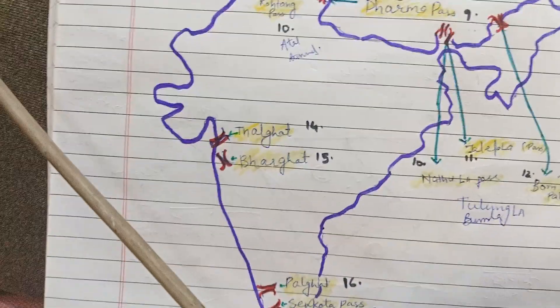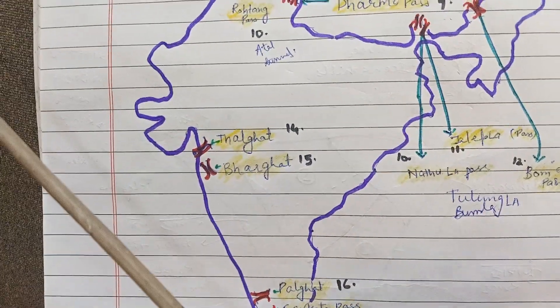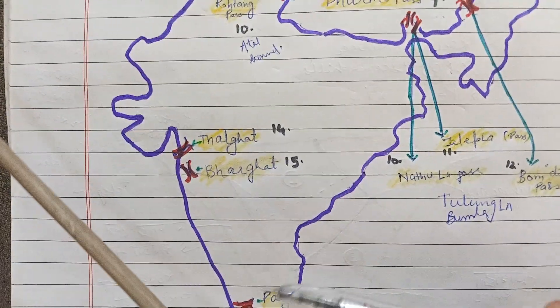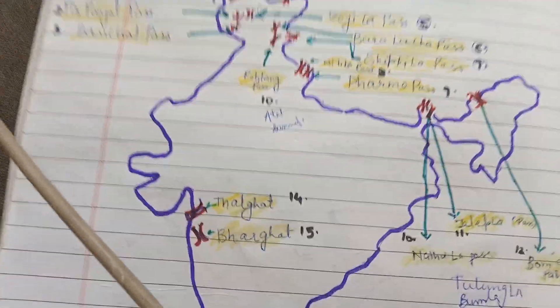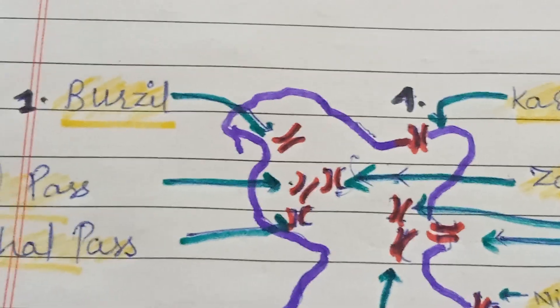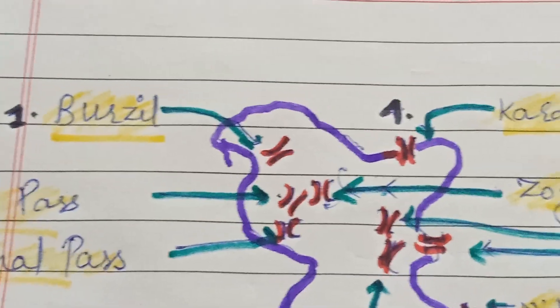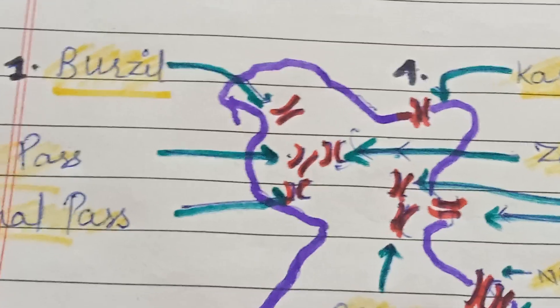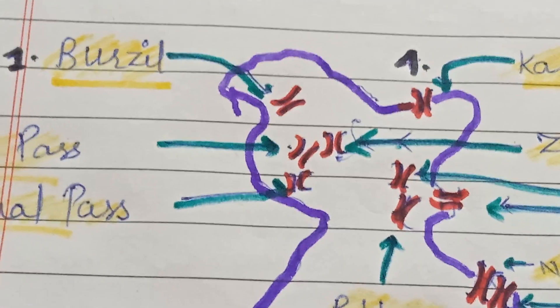Palghat is also connected to Pune. Now we are going to go up to the north. The first pass is Burzil Pass. The Burzil Pass is also called Pioke. That is the first pass.